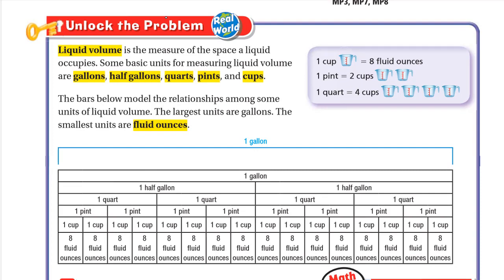Some basic units for measuring liquid volume are gallons, half gallons, quarts, pints, and cups. One cup equals eight fluid ounces — eight ounces make one cup. One pint equals two cups, and one quart equals four cups.